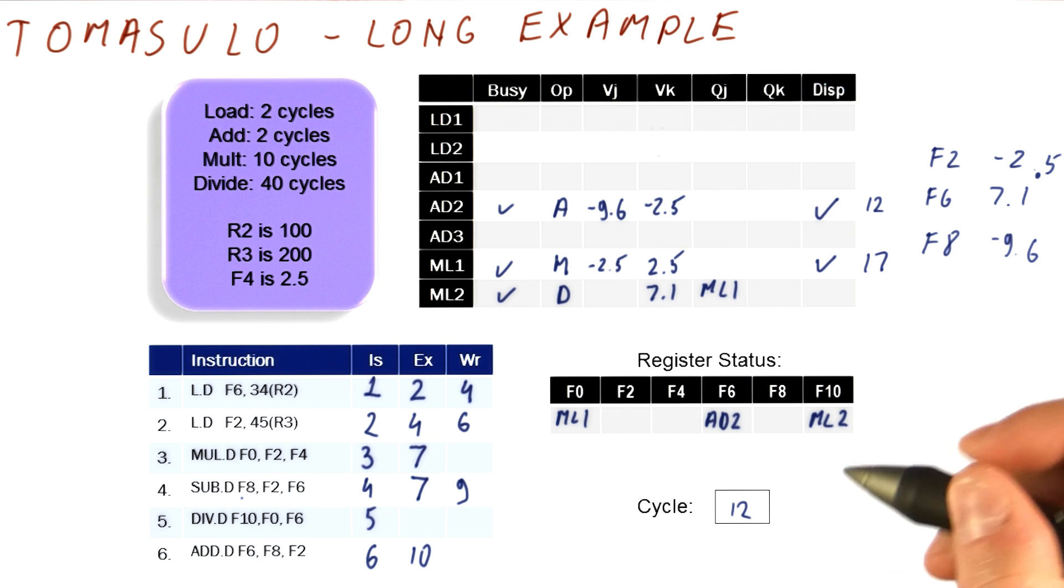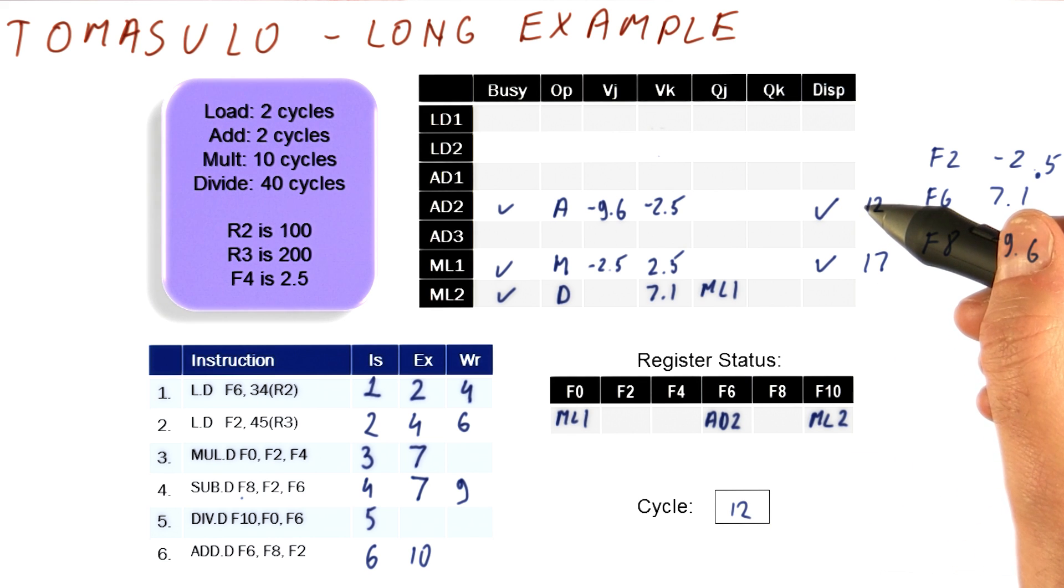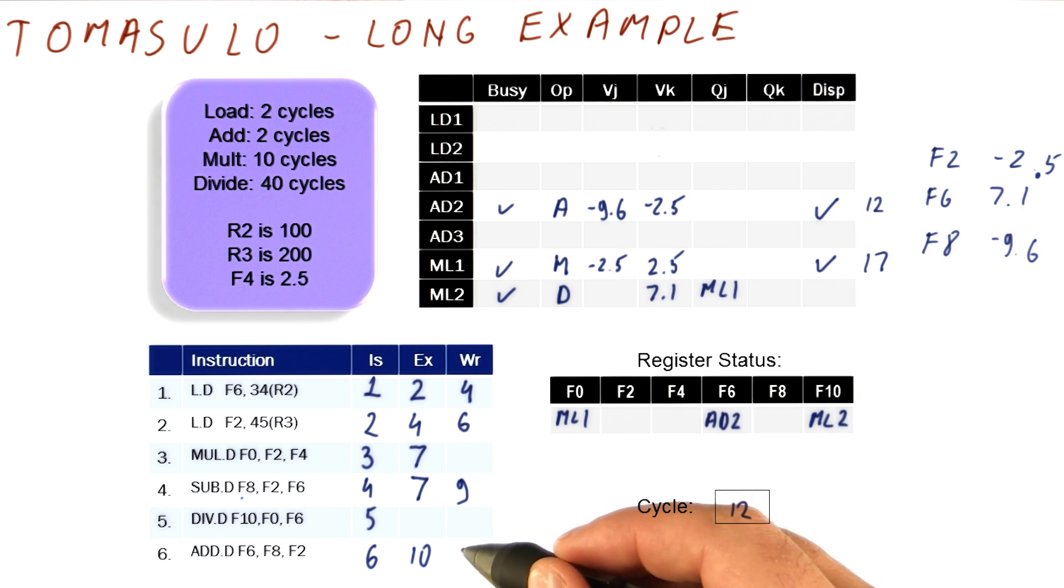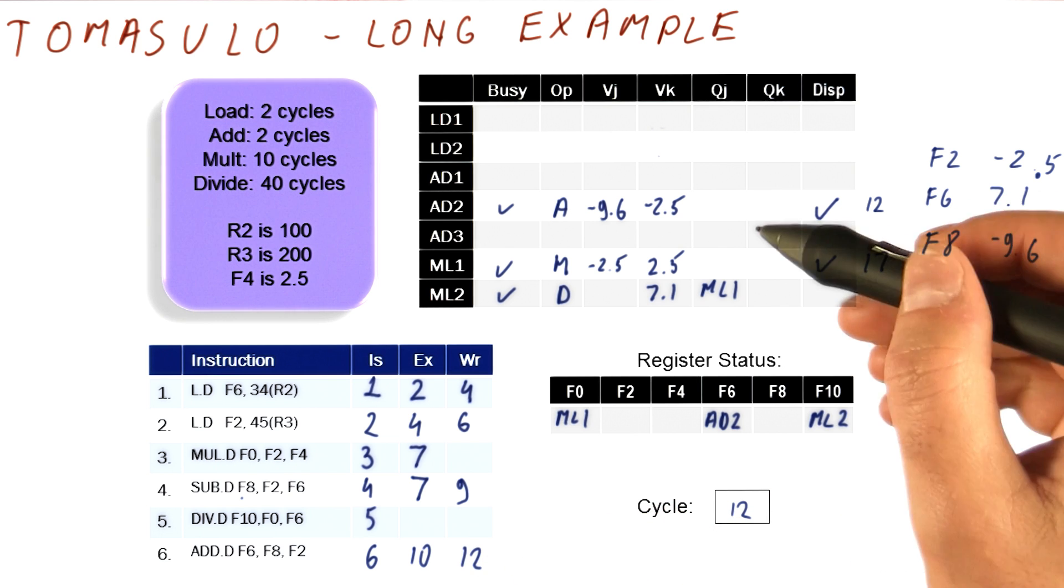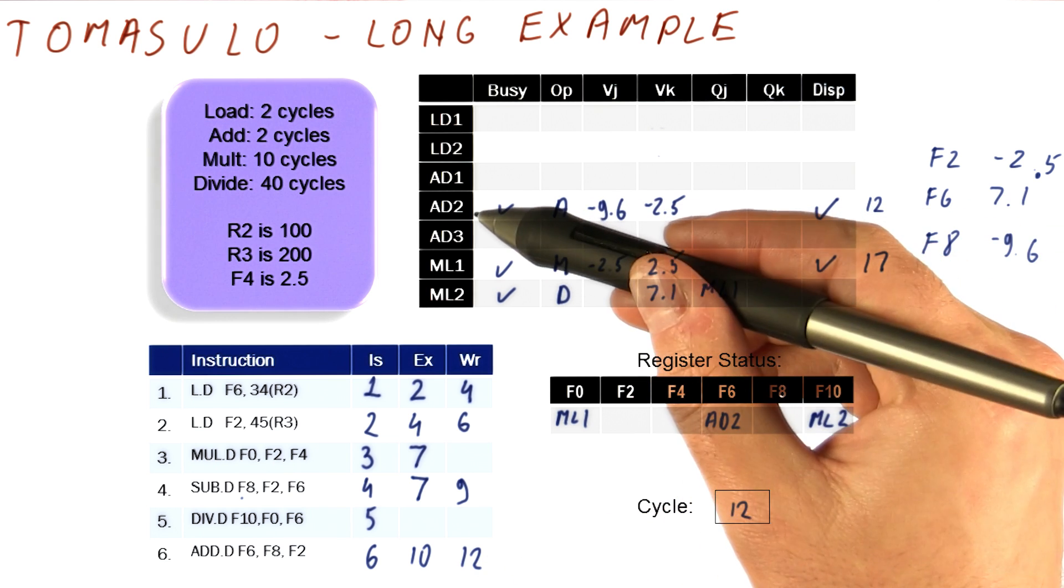But in cycle 12, what's going to happen is this instruction is going to broadcast its result. So we will mark that it broadcasts the result. We will find the register that matches AD2, which is F6.